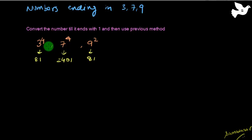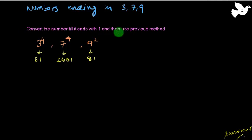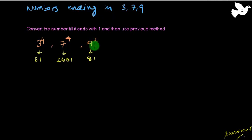Now let's look at the numbers ending in 3, 7, and 9. Till now we understood the numbers ending with 1, which was very simple. So in this case, all you need to do is convert 3, 7, and 9 into a number ending in 1.